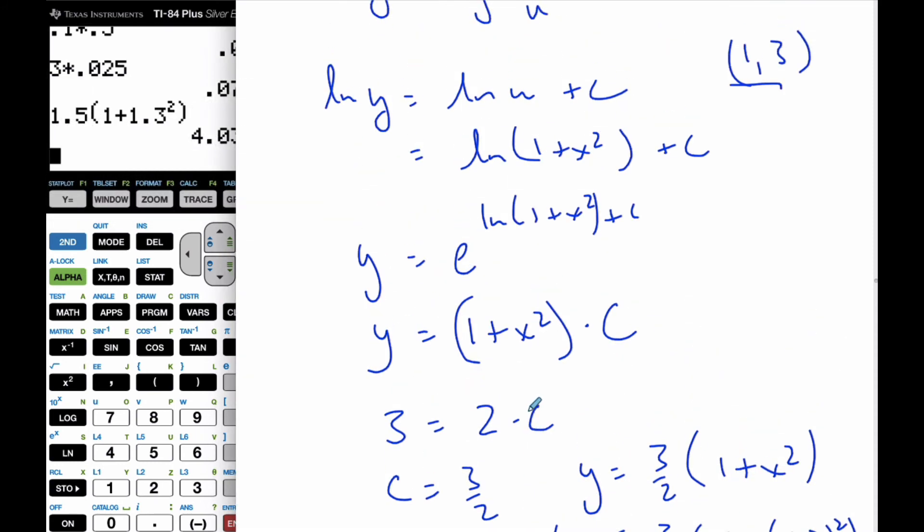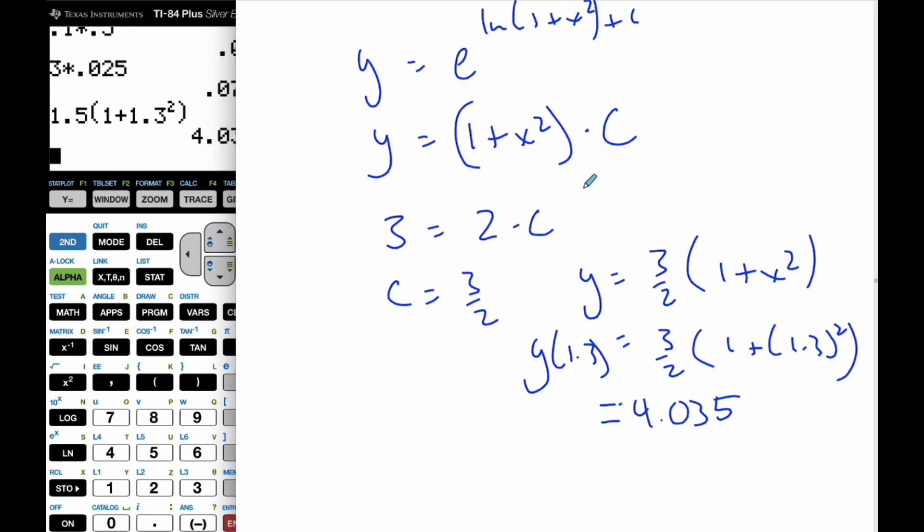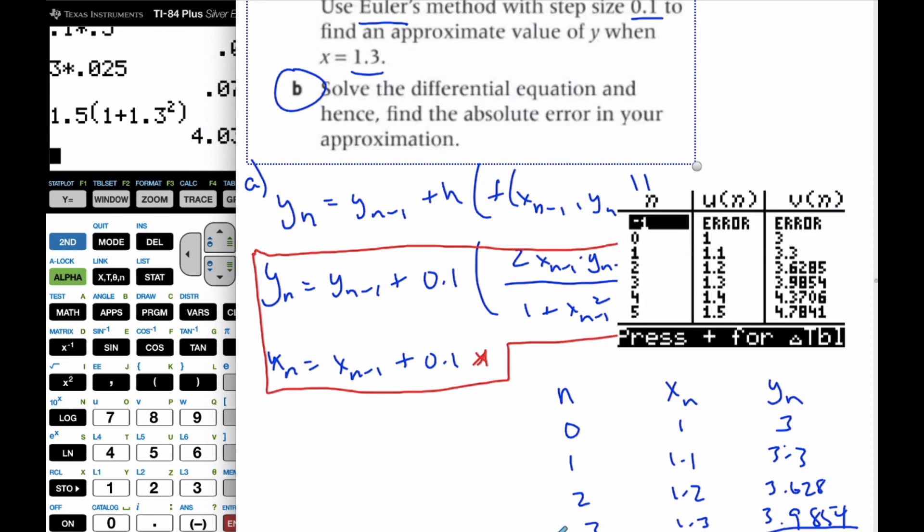And so when I take this value, 4.035, and this value, we're asked to find the absolute error.